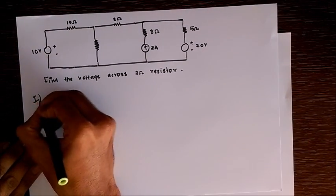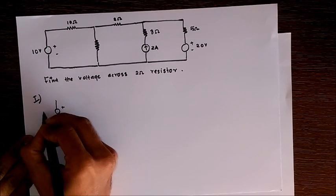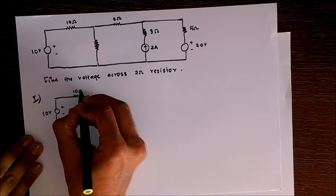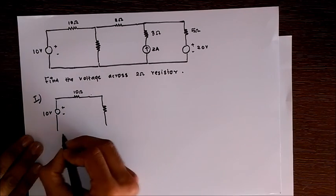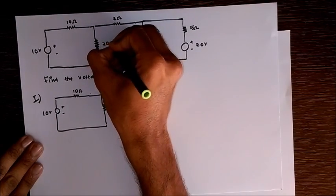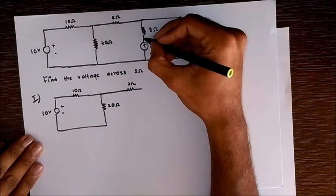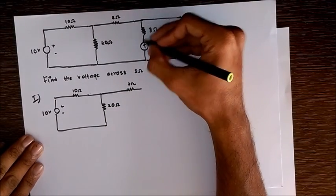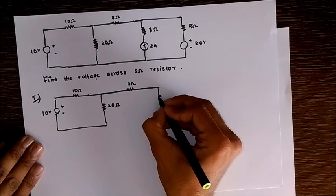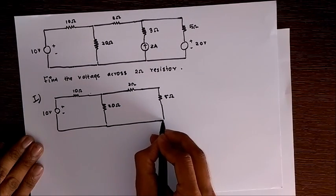So the first step, we take the 10 volt voltage source. We activate the 10 volt voltage source and deactivate the other two sources. Resistors stay the same. As you can see, the 2 ampere source when open circuited, no current goes through this branch. So this 3 ohm resistor becomes insignificant.